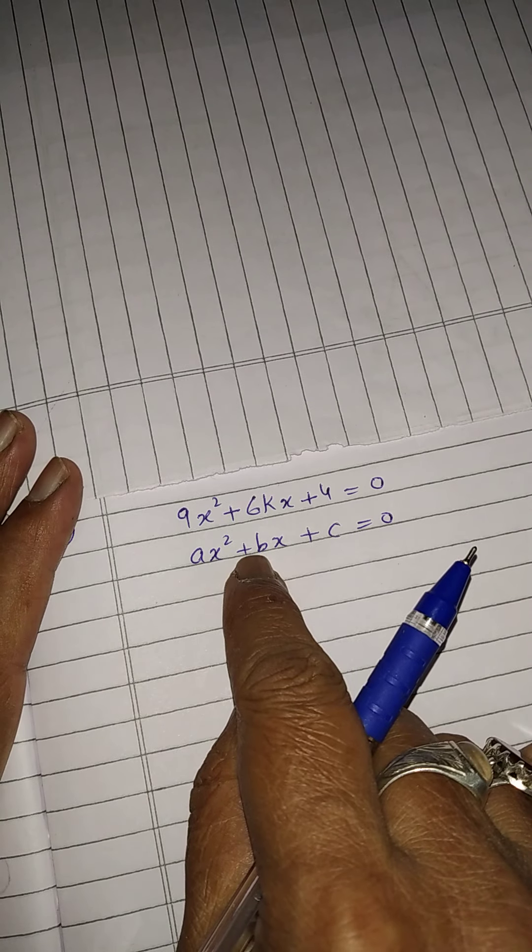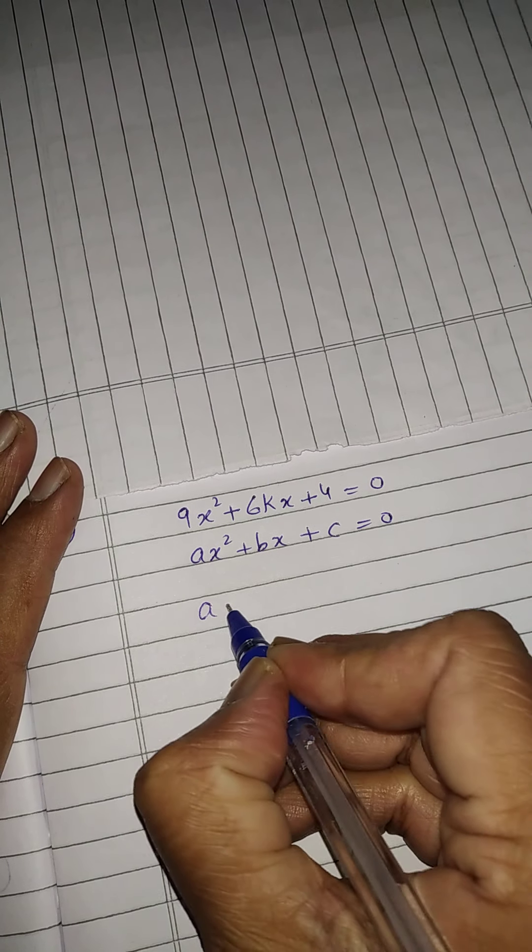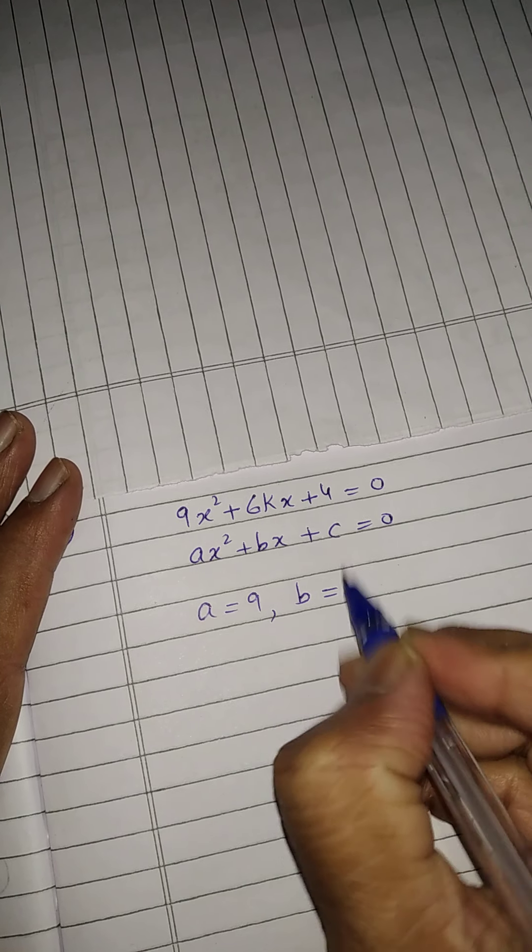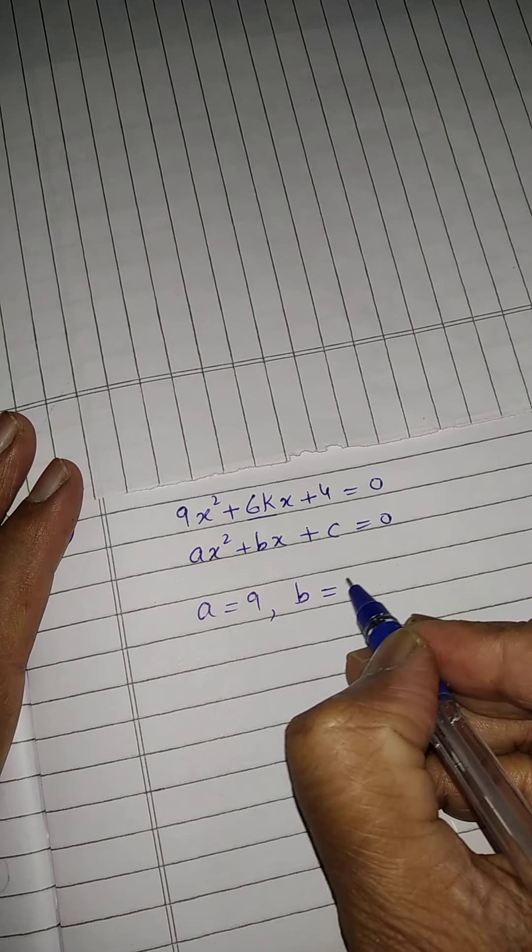So, we will compare this standard form with the given equation. So, in this equation, A is equal to 9, B is equal to that will be the coefficient of x, that full will be B, 6k.